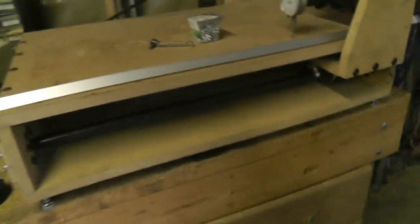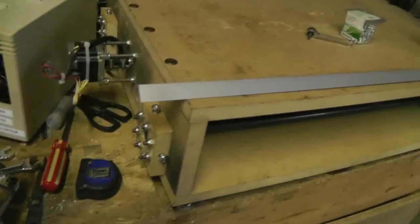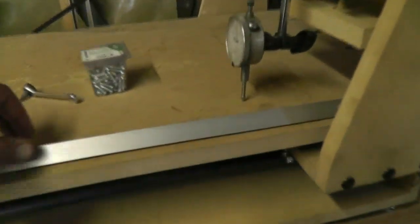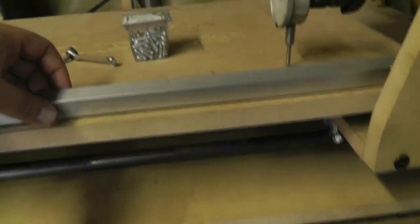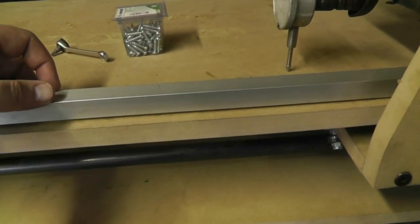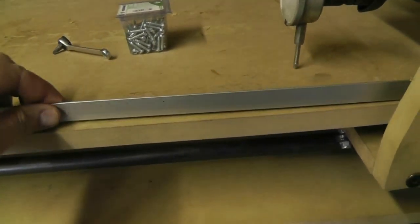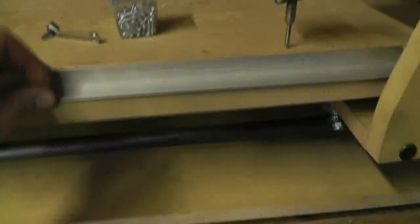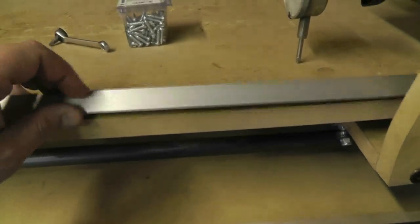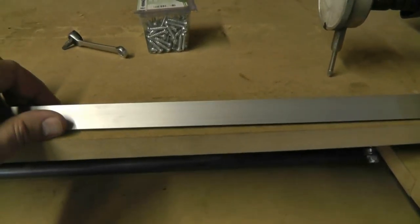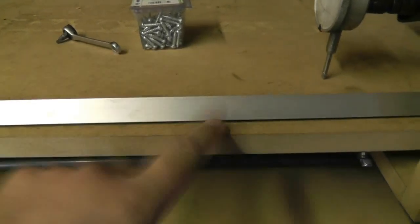So as I said in the previous segment, I put these on, and I was working my way around this thing, leveling it, and I noticed this. Quite a considerable gap here. And in case you think that the aluminum is bent, no matter which way you put it, you see about approximately the same gap. So it's related to the deck.